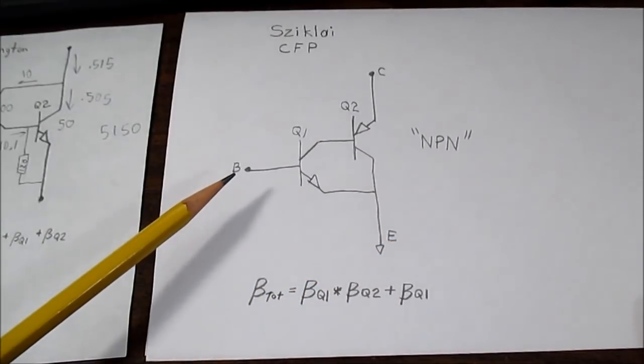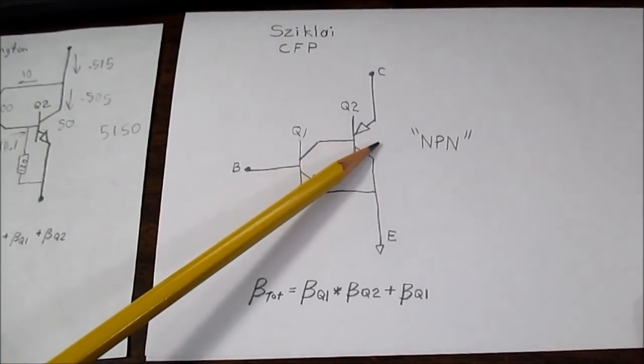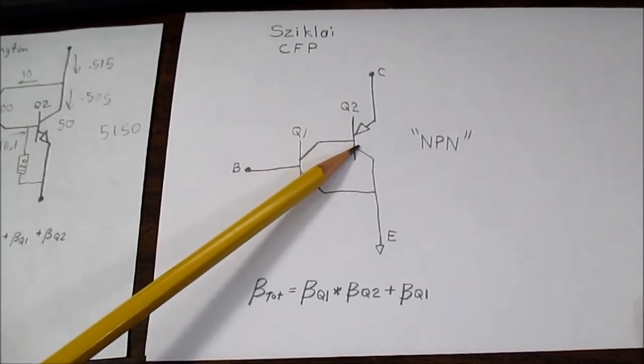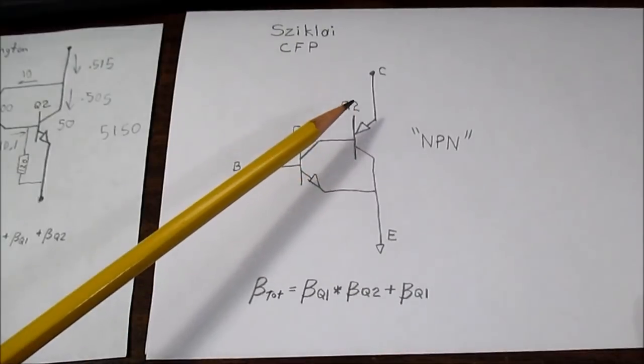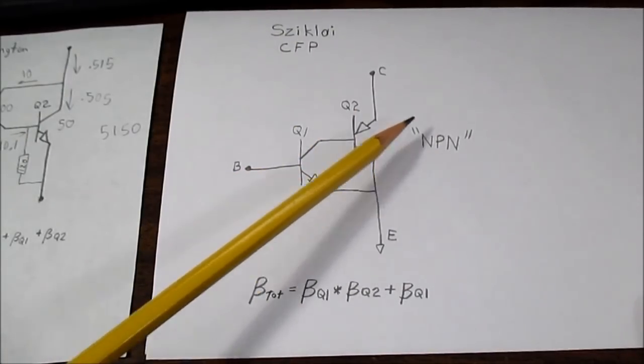Of course I have the base here and the collector is here even though this is a PNP transistor and on its collector I have emitter. What's happening here is this transistor, even though the output Q2 is a PNP, it behaves as an NPN. So I have it labeled as an NPN in quotes here.